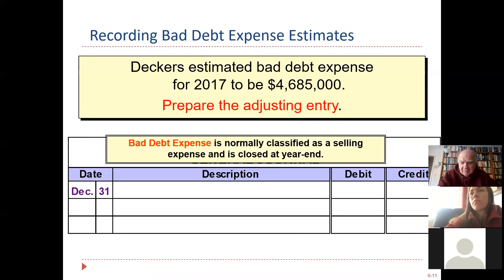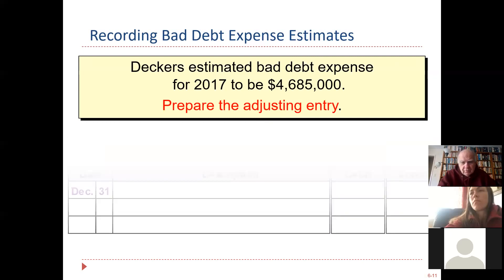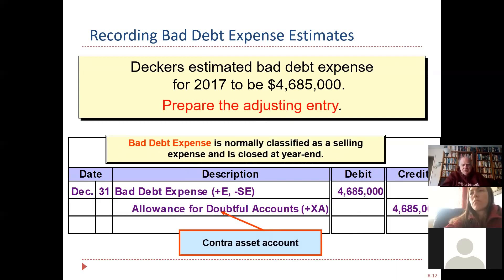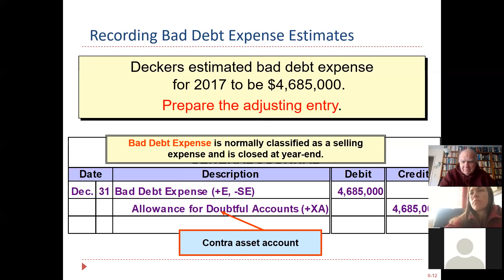Bad debt expense is a selling expense closed at year end like any other item. Now look at your journal entry because it introduces two new accounts, including another contra. Bad debt expense credits something called allowance for doubtful accounts — the XA notation tells you it's a contra account.